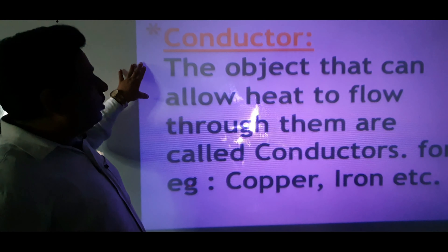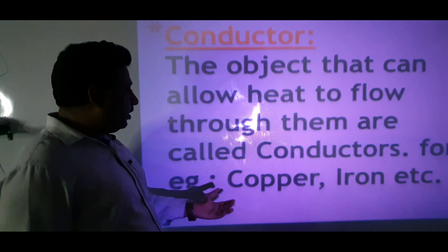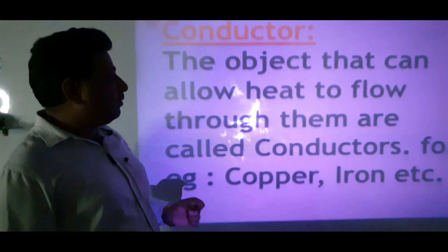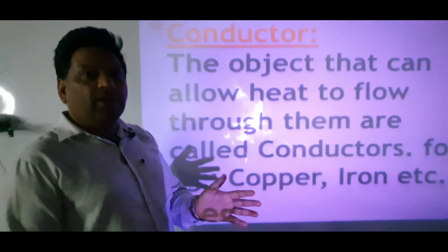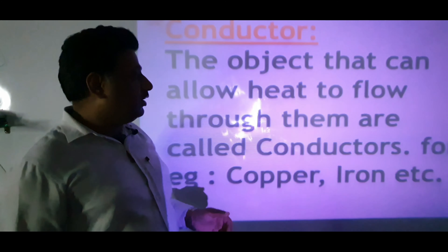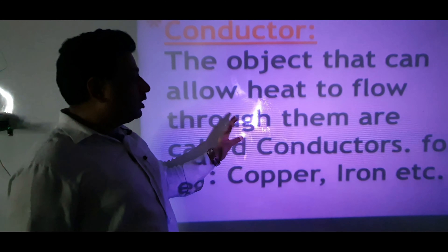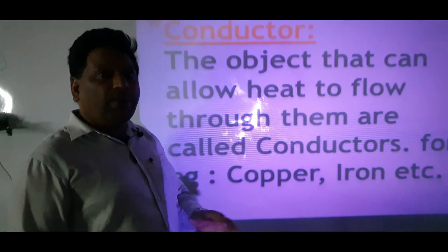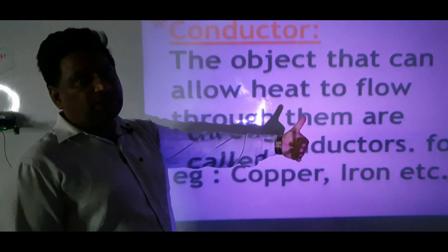Objects that can allow heat to flow through them are called conductors. Heat flows from one place to the other through them. For example, copper and iron — you can see how many utensils are made of metal, because in metals heat transfers from one place to another. So copper and iron are examples of conductors.